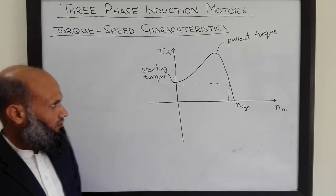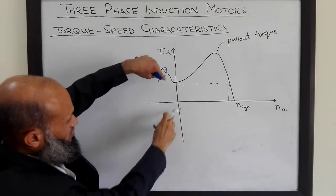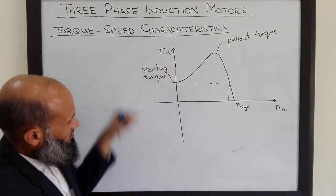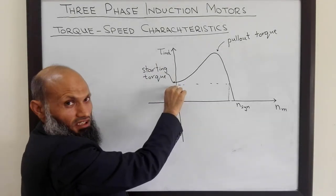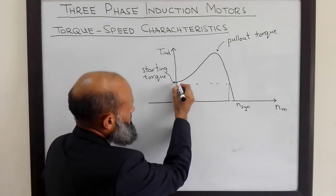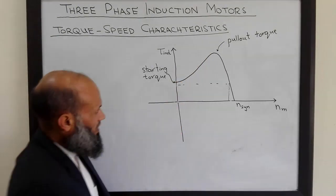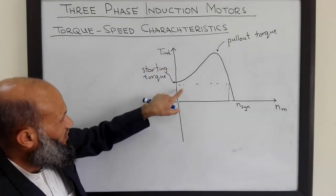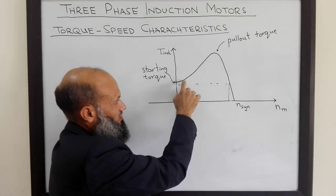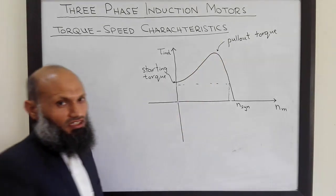So what happens when you switch on the induction motor? If you have connected the rated torque to the motor, initially at zero speed, induced torque will be greater than the load connected to the motor. So the rotor of this induction motor will gain speed. And as it gains speed, induced torque is also increased. We have a larger difference between the induced torque and the load torque. Therefore, the motor will accelerate, it will gain speed, and as speed increases the induced torque will also increase.